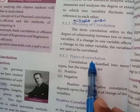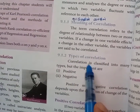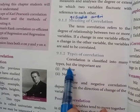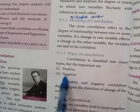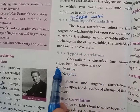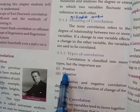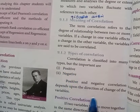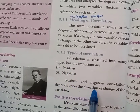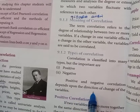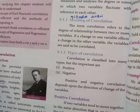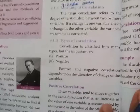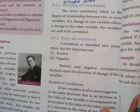Types of correlation: correlation is classified into many types, but the most important are positive and negative correlation. The classification depends upon the direction of change of the variables.